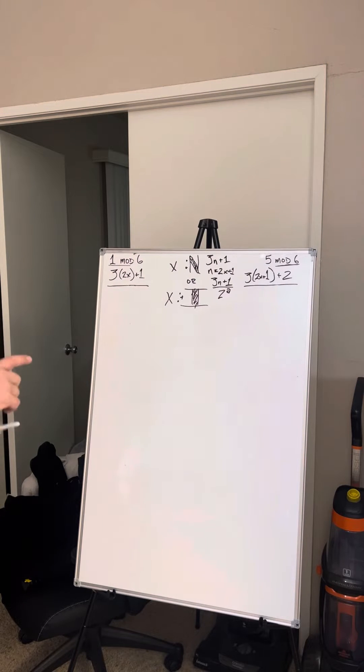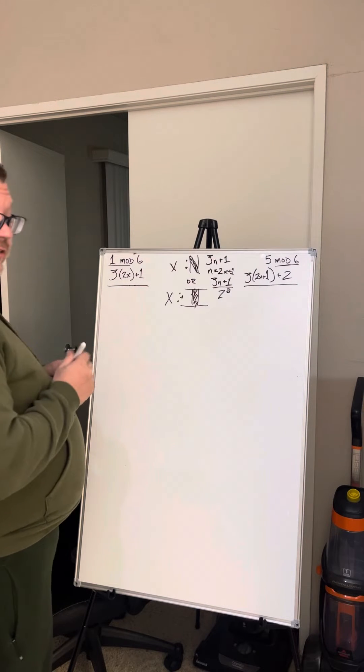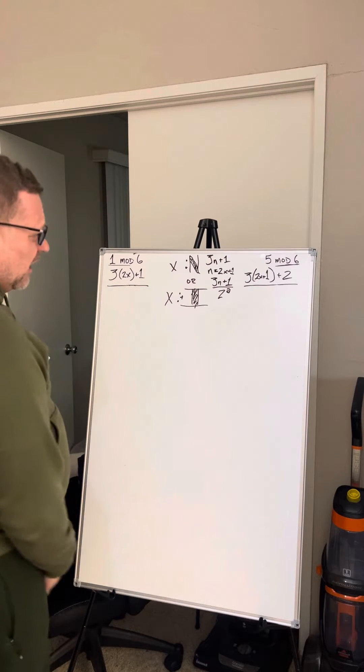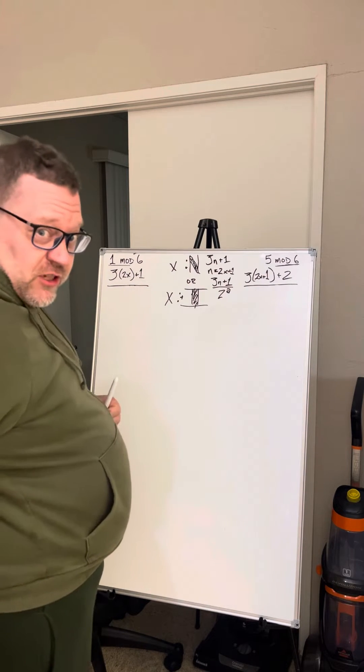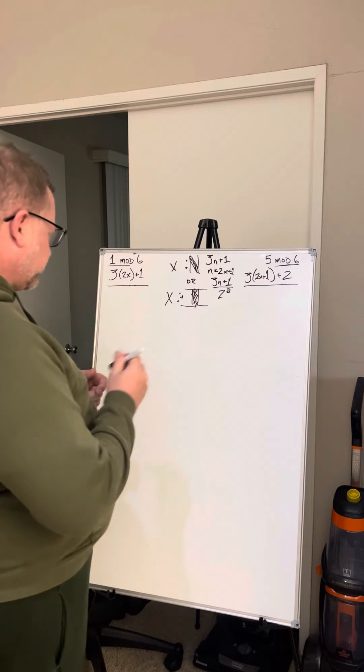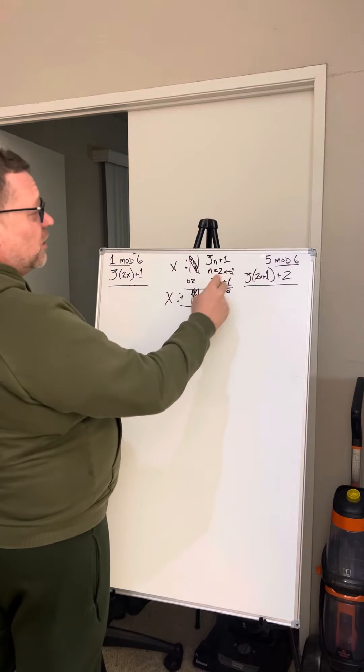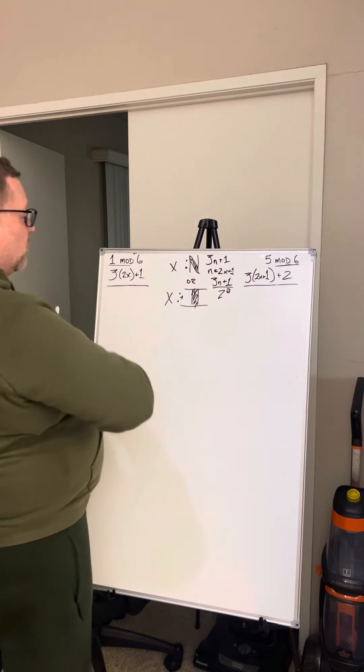Hello people, and this is a continuation of my Collatz conjecture set. I think after all this time I may have found the right approach. If you've watched all the stuff previously, you know that the only odd outputs of this function are 5 mod 6 and 1 mod 6.